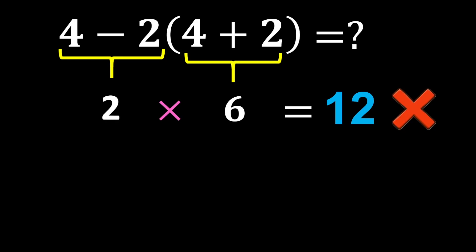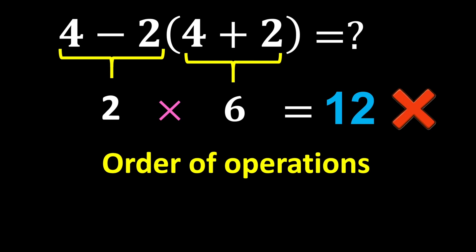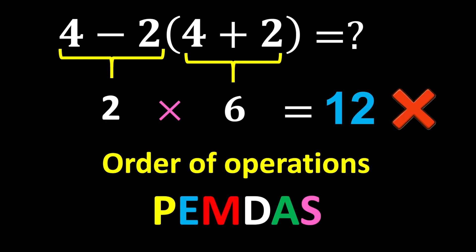This rule is called the order of operations. The order of operations is known by the acronym PEMDAS, with each letter of PEMDAS representing a step.